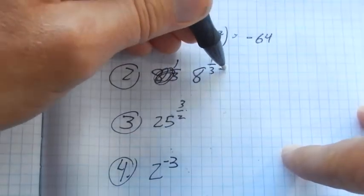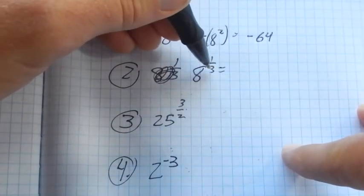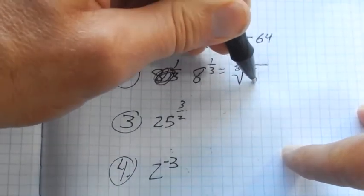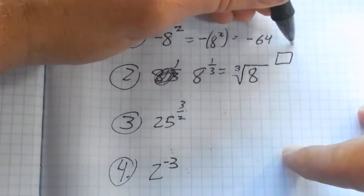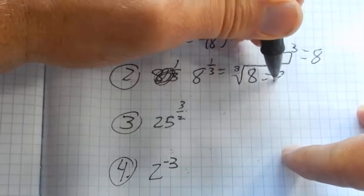So 8 to the 1/3 power. 1/3 power means that we're taking the 3rd root of it. This 3 is like kind of undoing the exponent piece. So it's the same as this question right here, which is asking what to the 3rd power would give you 8?